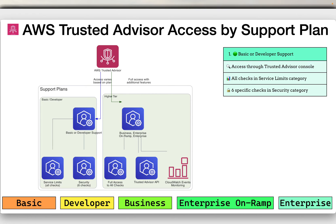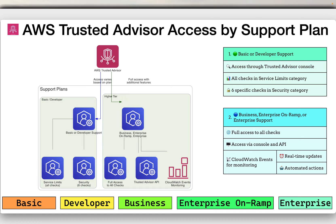With business, enterprise on-ramp, or enterprise support plans, you have full access to all Trusted Advisor checks via the console and the AWS Trusted Advisor API. You can integrate with third-party tools, your corporate portal, or alerting mechanisms through application performance management tooling. You can also use Amazon CloudWatch events to monitor the status of Trusted Advisor checks for real-time updates and automated actions.